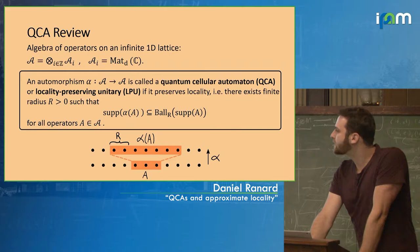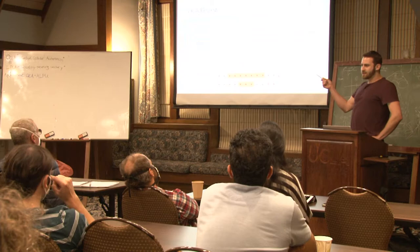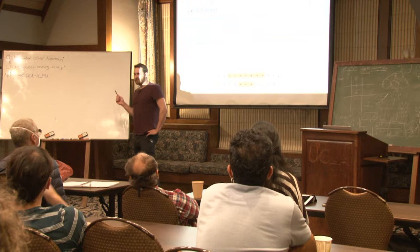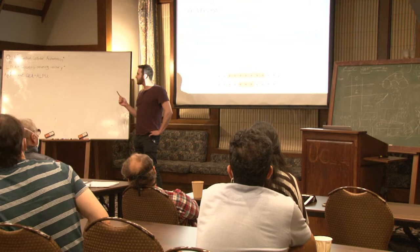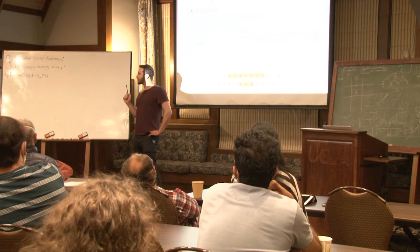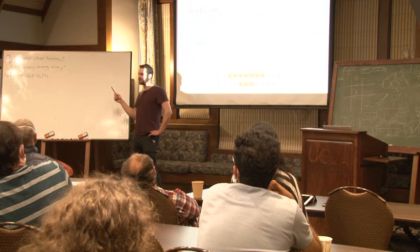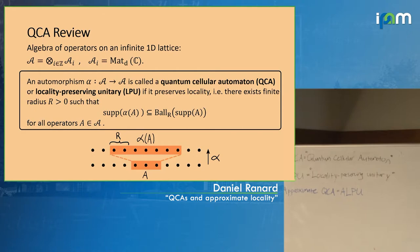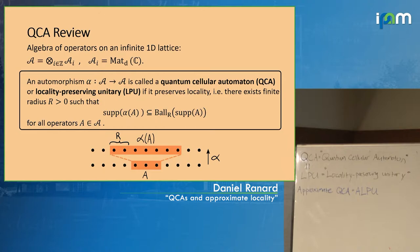A QCA — Quantum Cellular Automaton — is a somewhat crazy name. There's also LPU, Locality Preserving Unitary, which is a little bit more evocative. In our work we decided to call these approximate QCAs ALPUs: Approximate Locality Preserving Unitaries. What is a QCA or an LPU? It's just this automorphism that preserves locality — it has some finite range R, and when it acts on A, it'll expand A in a controlled way.